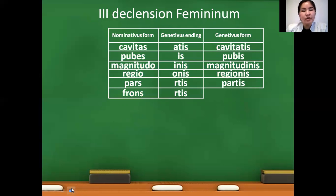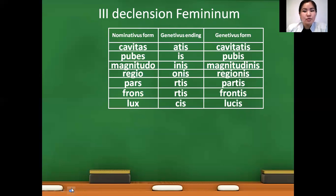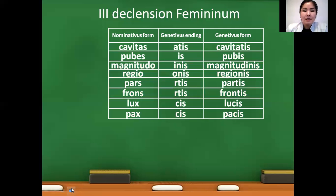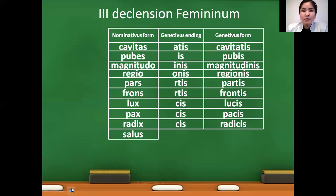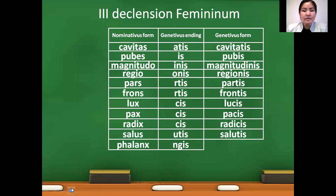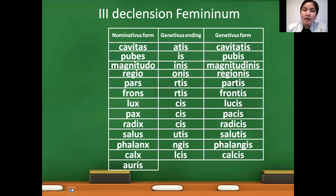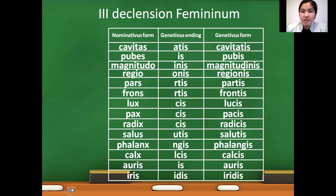Lux — x changes to -cis — lucis. Pax — x changes to -cis — pacis. Radix — genitive form will be radicis. Salus — us ending changes to -utis — salutis. Phalanx — x changes to -ngis — phalangis. Calx — calcis. Auris is a Latin origin word, genitive will be auris. Iris is a Greek origin word, genitive form will be iridis.